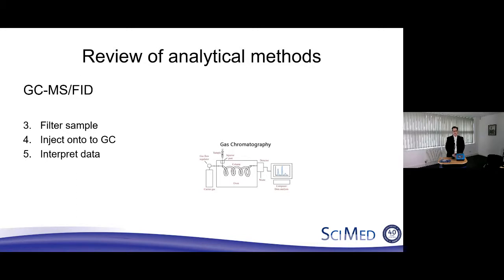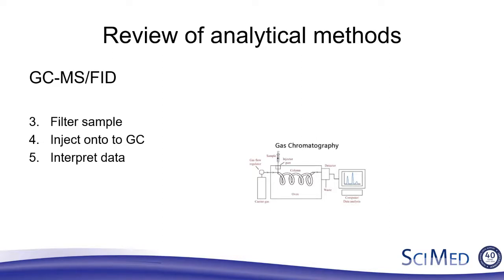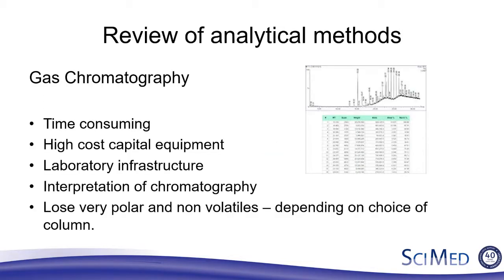Moving on to something a bit more accurate and scientific: GC with MS or FID. Again, we do the same first extraction phase, then we filter the sample — because GCs don't like having lumps put down them — we inject it onto the GC and simply interpret the data. It's not a quick and easy technique; it's relatively time consuming and has high-cost capital equipment. You also need a laboratory with trained staff, gases, and safety infrastructure — a big cost built around doing the test by GC-MS. You also need the expertise to interpret the chromatography, since GC gives us all individual components and we must sum them into a meaningful FOG result.